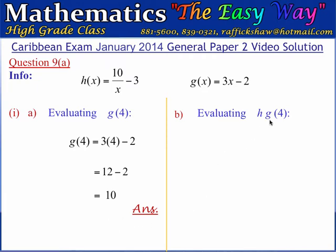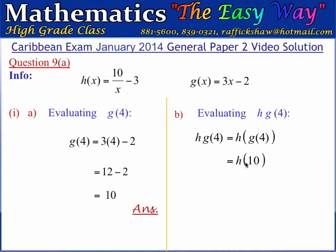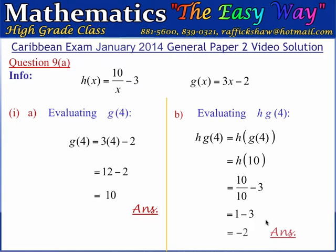Part b wants us to find h of g of 4. We have already calculated g of 4 to be equal to 10, so h of g of 4 is simply equal to h of 10. h of 10 is obtained by substituting 10 for x in the function h, giving us 10 divided by 10 minus 3. 10 divided by 10 is 1, and we are subtracting 3. So 1 minus 3 is negative 2. Therefore, h of g of 4 is equal to negative 2.